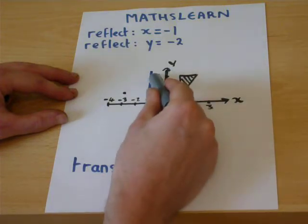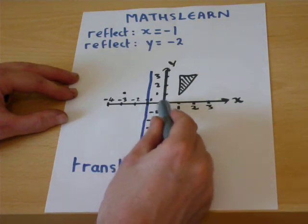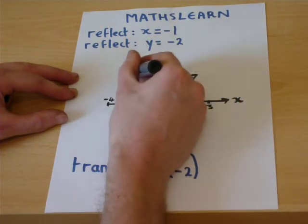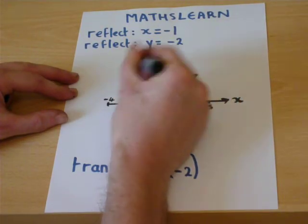This coordinate here is 2 across, 1, 2. So when reflected it also goes 2 across.